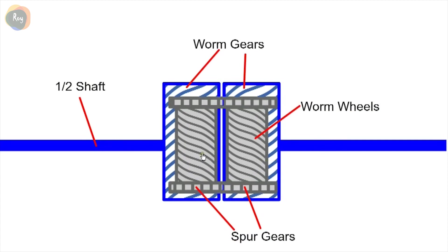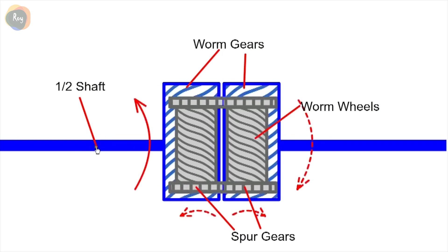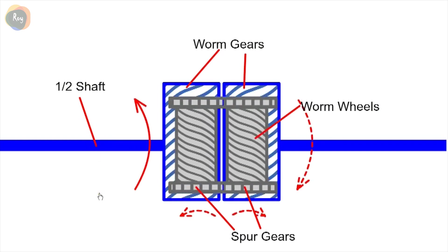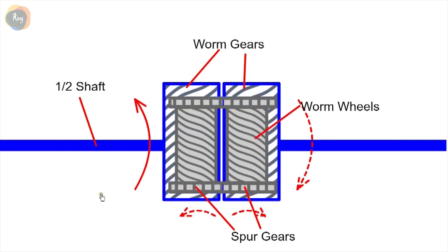To demonstrate the operation of the Torsen diff, we'll keep the cage stationary and rotate one of the wheels, effectively jacking up the car and rotating one wheel forward and the other wheel backwards.